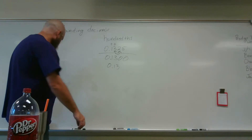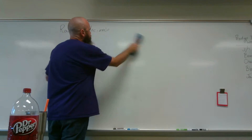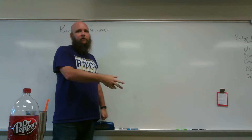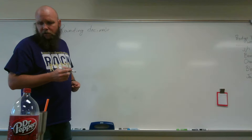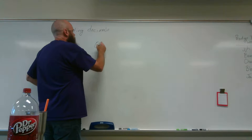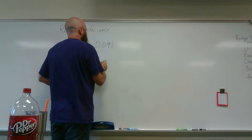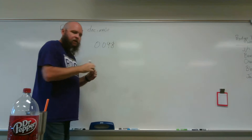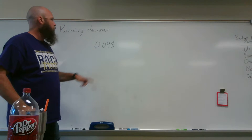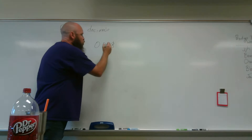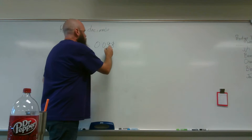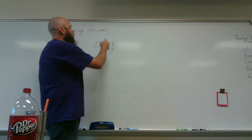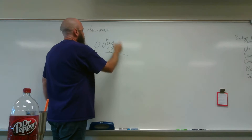All right, let's look at another one. Rounding to the nearest hundredths. This year you only have to round to the tenths and the hundredths, so you don't have to go any farther than that. Rounding to the nearest hundredths — so we find our number. Look next door. Is that five or greater? Yes. Then we add one more.